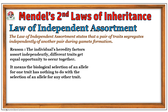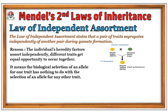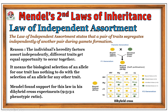This law can be explained with the help of a dihybrid cross. The dominant traits of a seed are round and yellow, and the recessive traits are wrinkled and green seeds. When these two parents are crossed, the F1 progeny shows round seeds with yellow color, which justifies Mendel's first law of inheritance. But in the F2 generation, instead of only round and yellow seeds, round yellow, round green, wrinkled yellow, and wrinkled green seeds were seen in a phenotypic ratio of 9:3:3:1. With the help of this dihybrid cross, Mendel concluded that a pair of traits segregates independently of another pair during gamete formation.